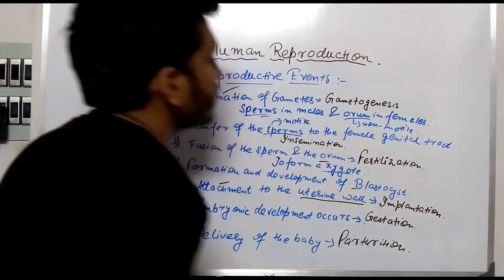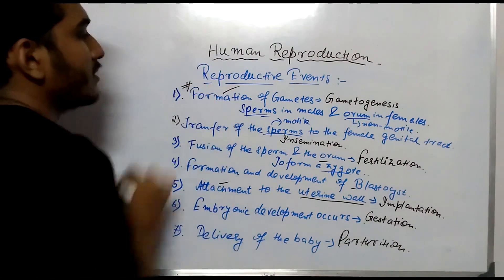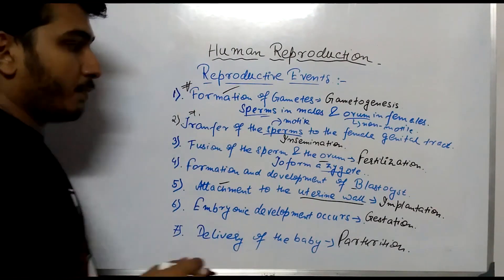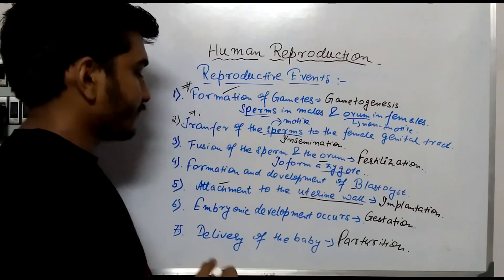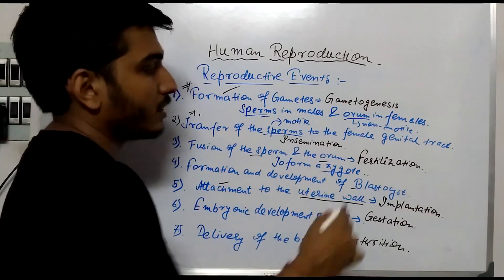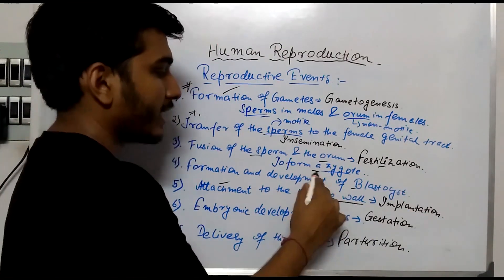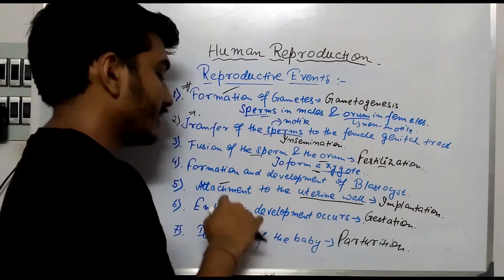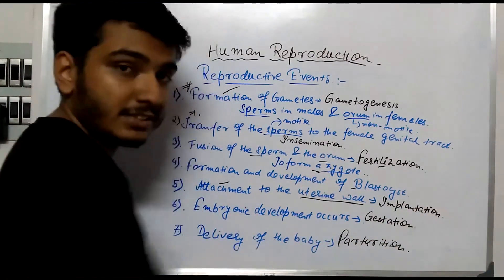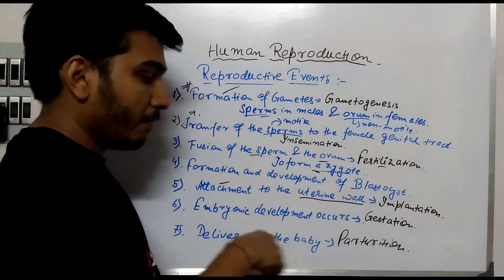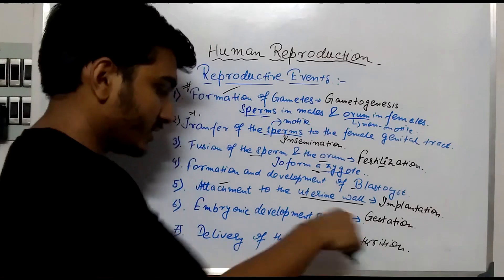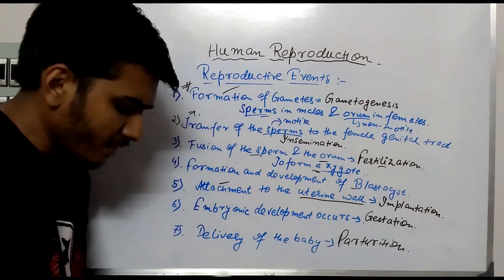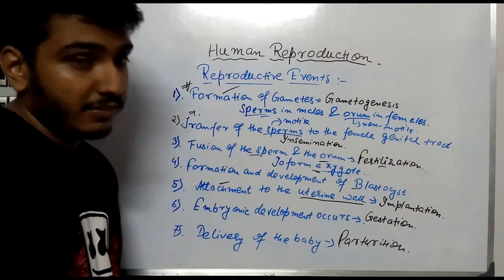So to recap: first, gametogenesis; then transfer of the male sperm to the female genital tract; then fusion of sperm and ovum — fertilization — forming the zygote; then formation and development of the blastocyst; then attachment to the uterine wall, which is implantation; then embryonic development, which is gestation; and finally delivery of the baby — parturition. These are the 7 reproductive events.